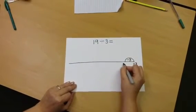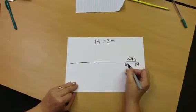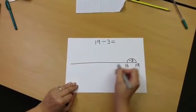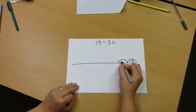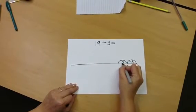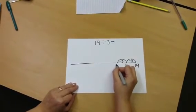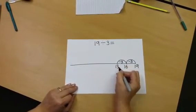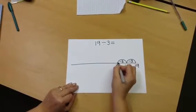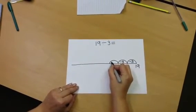So 19 subtract 3 is 16. 16 subtract 3 is 13. 13 subtract 3 is 10.